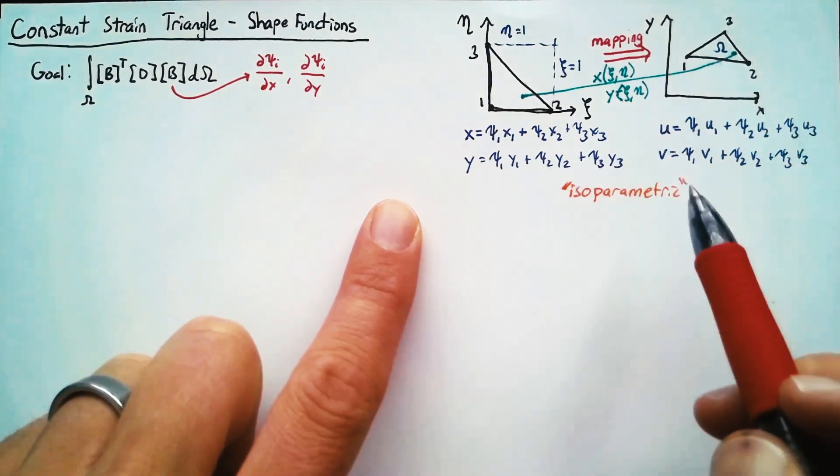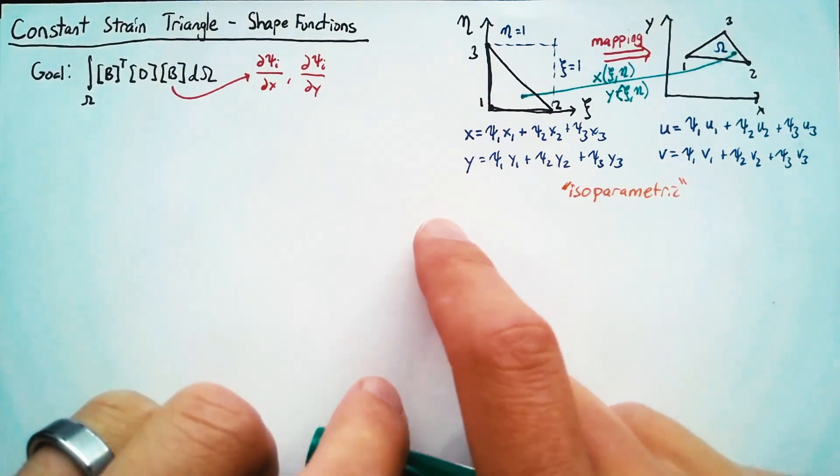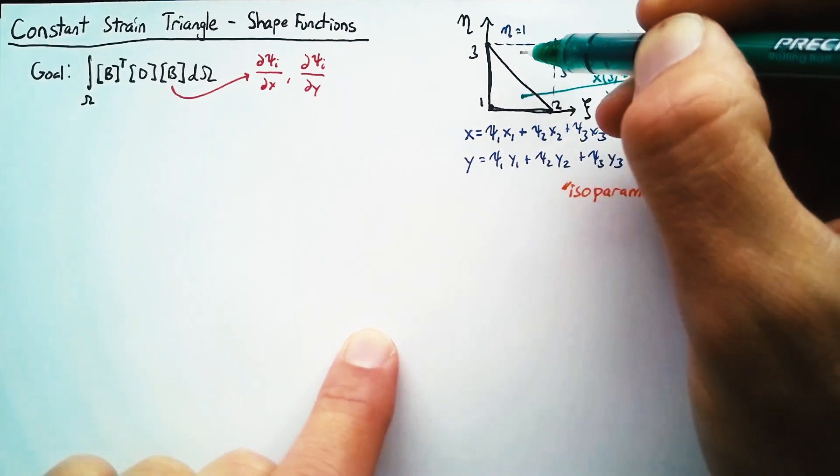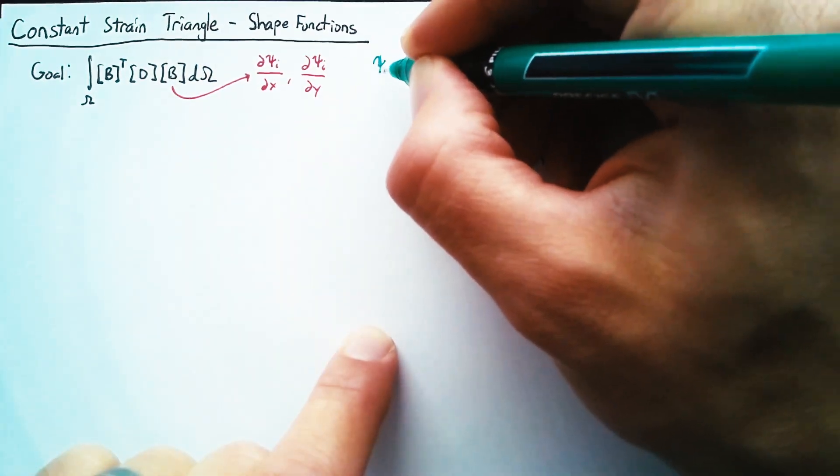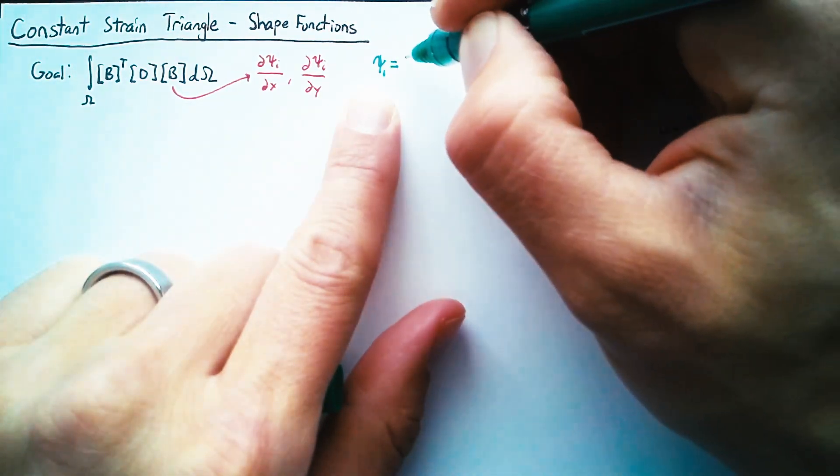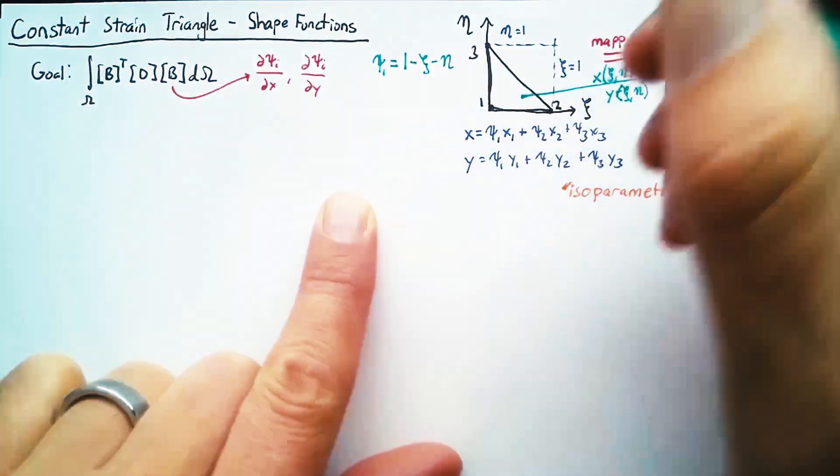Now that we have all of that in mind, we can go ahead and write the shape functions that we need on this element. Psi one needs to be one at node one and zero for the other two nodes. Well, we can write that pretty quickly. That's just going to be one minus C minus eta.